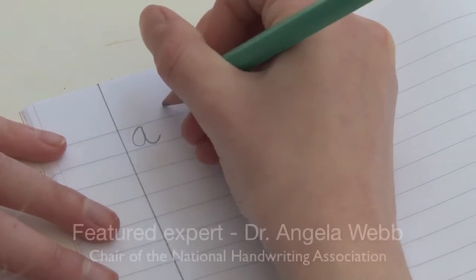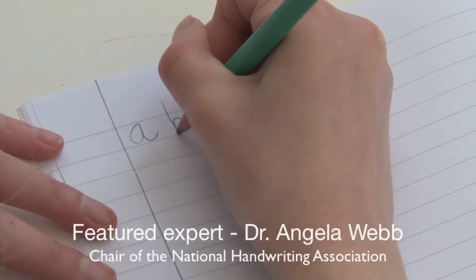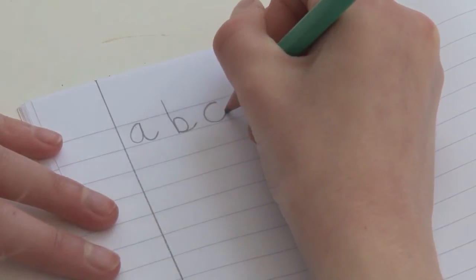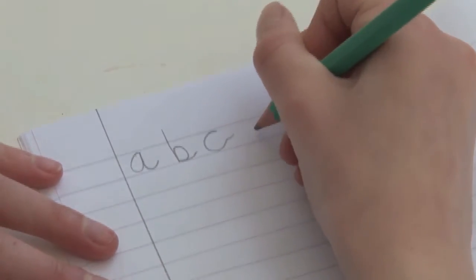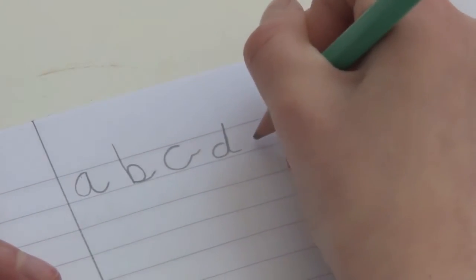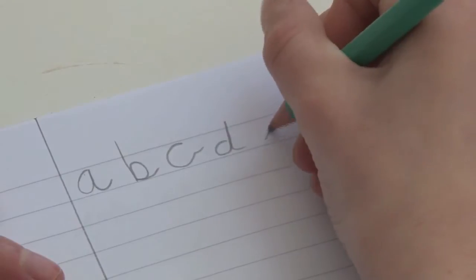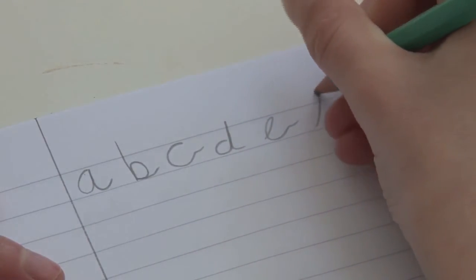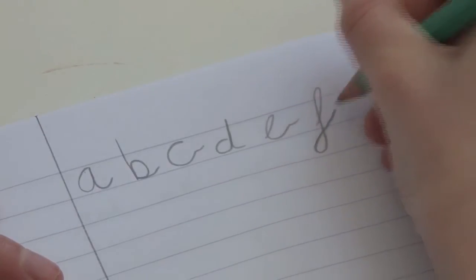Children need to be able to write and understand single letters before they join them up for joined-up or cursive writing. But it's important that they learn each letter in a dynamic form so they have an exit stroke or an exit flick at the end of each letter. This makes it very easy to join the letters once they understand how to form each one.